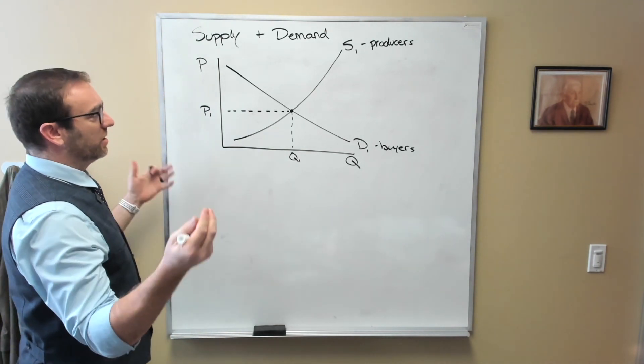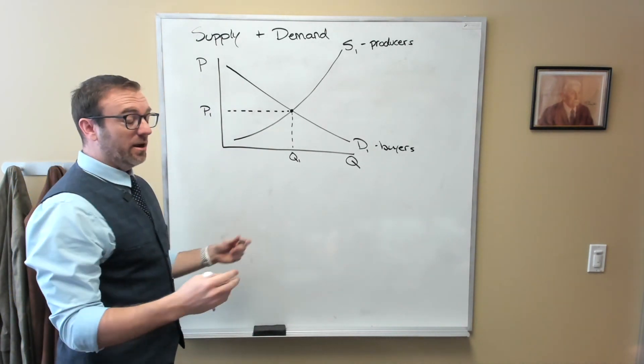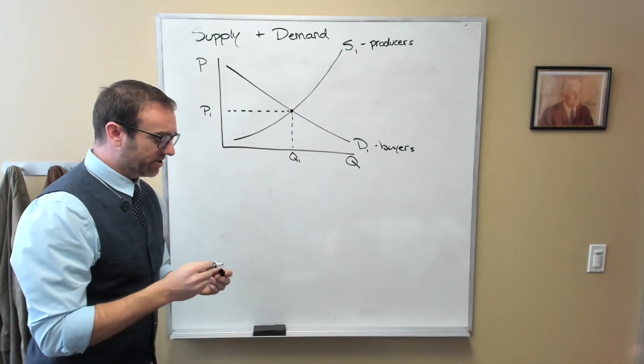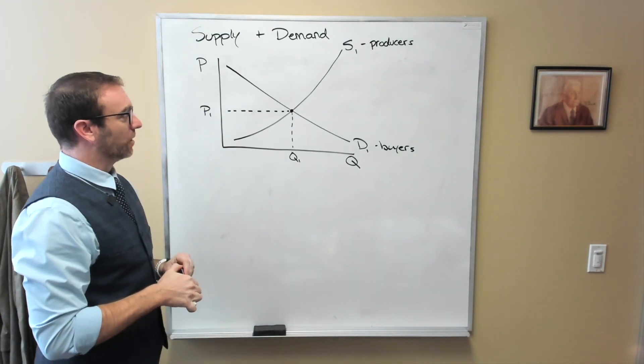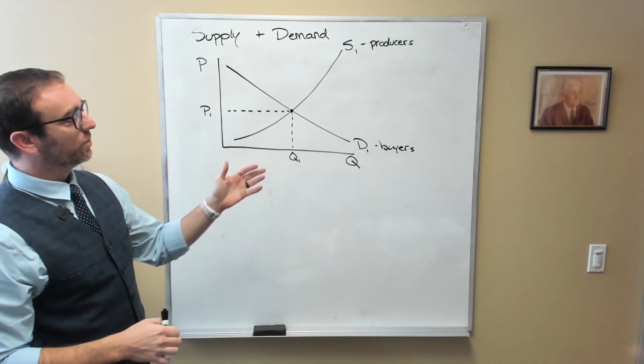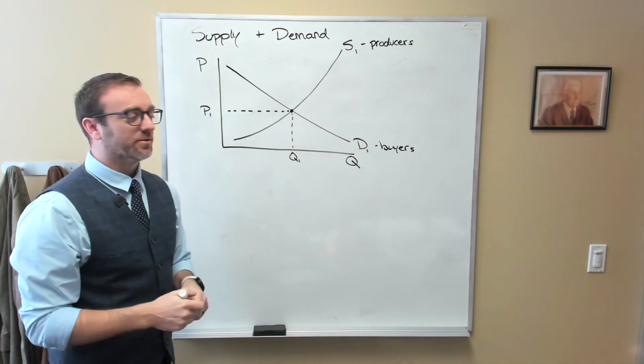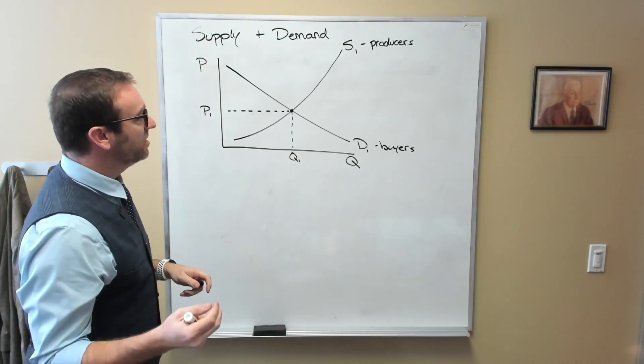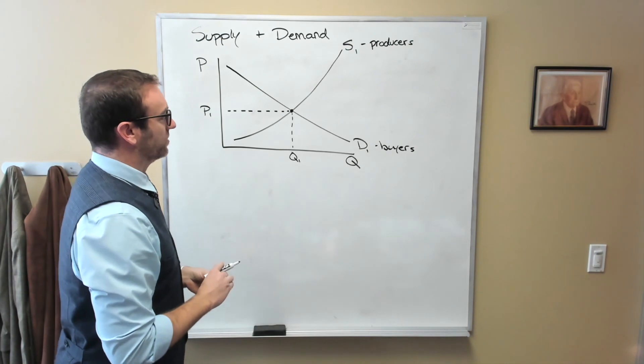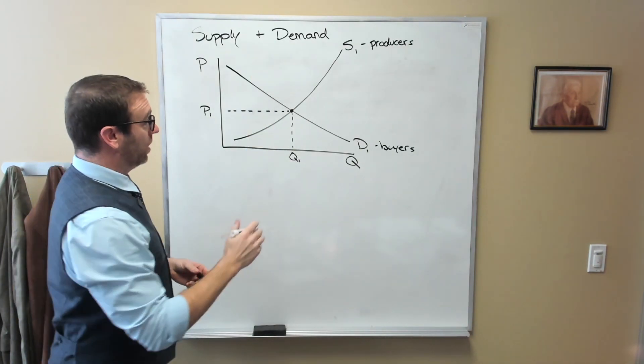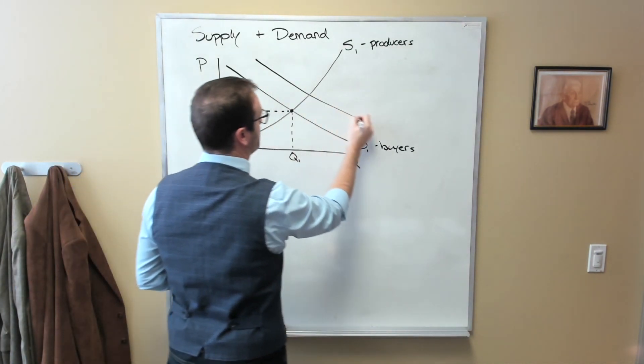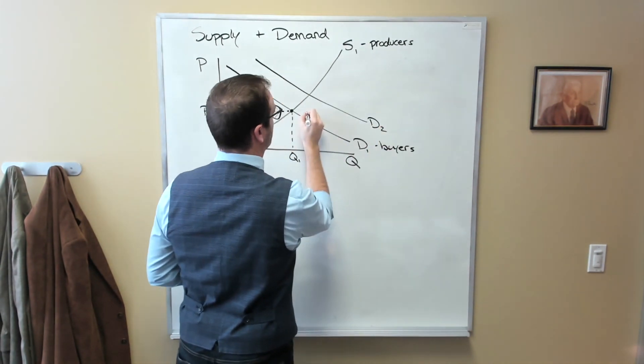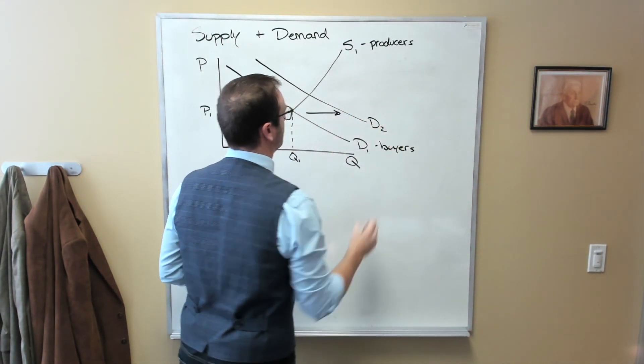In every market that we've ever talked about in any economics course, we understand the idea of shifting these curves. So if the demand were to increase due to perhaps some change in income or change in the number of consumers in a market, what we would do is simply shift the demand curve straight over to the right.